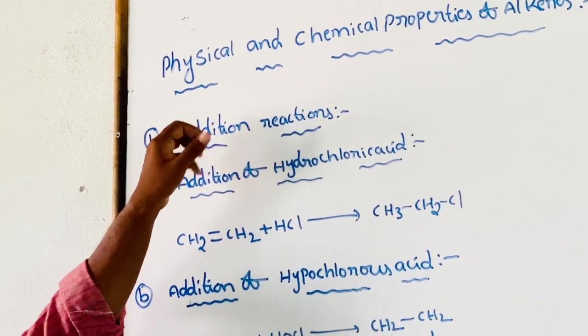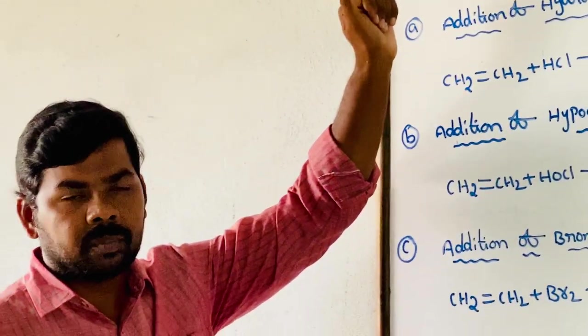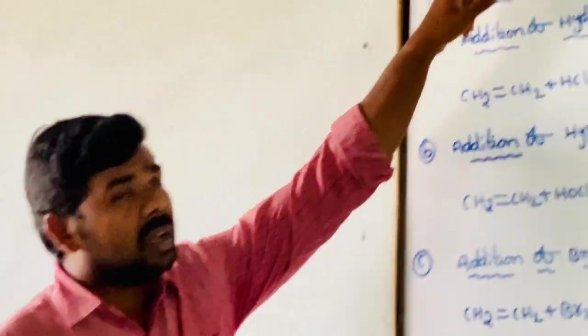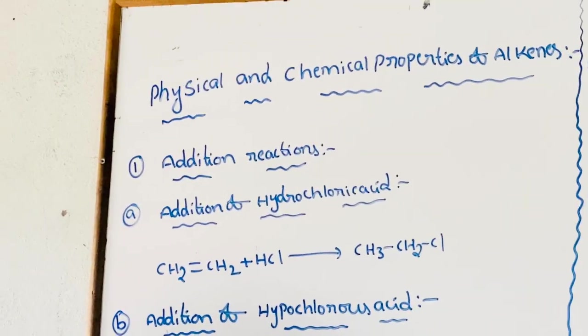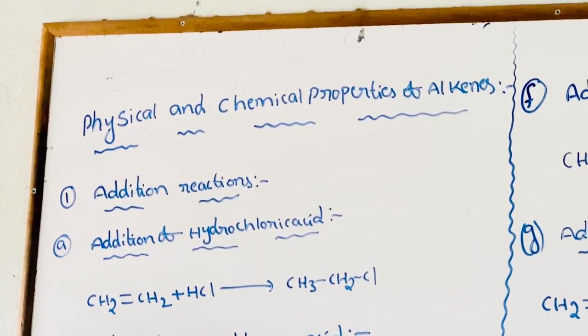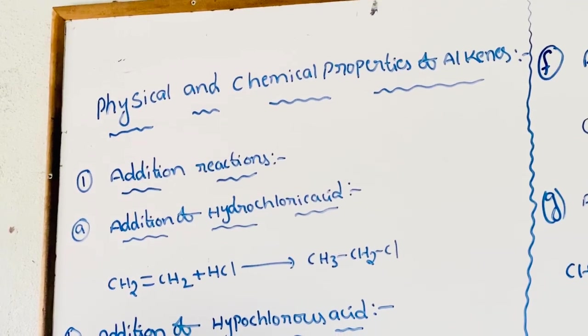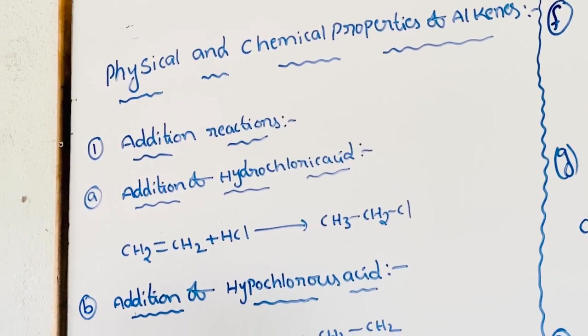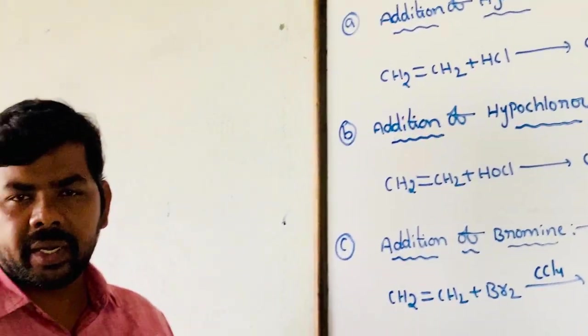The remaining ones up to C14 are liquids, and higher ones are solids. Alkenes are incompletely soluble, that is partially soluble in water, but highly soluble in organic solvents like ether, alcohol, benzene, carbon tetrachloride, etc.